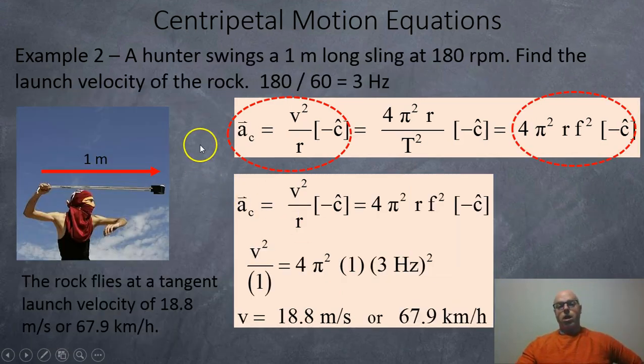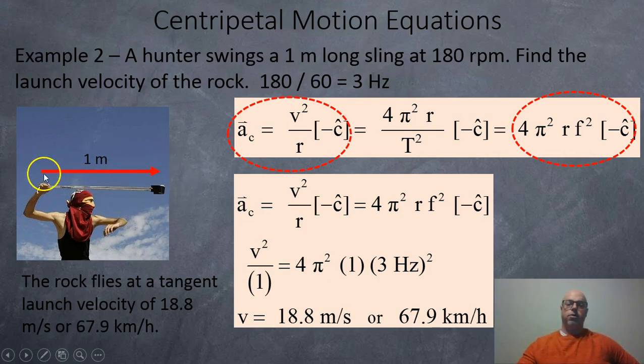Example two. A hunter is using a sling. It's one meter long. So from the pivot point in the hand to the center of mass where the rock's located is 1 meter. And this person is twirling it around 180 times per minute, so 180 rpm. The first thing we're going to have to do is convert that to hertz. So 180 divided by 60 is 3 hertz. So that means it's going around the person 3 times per second, pretty fast. And so now we'd like to find out the launch velocity of the rock.